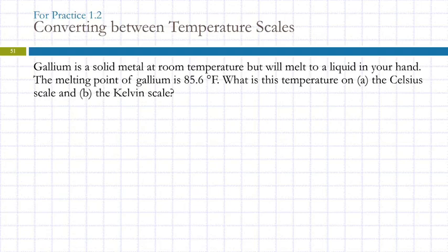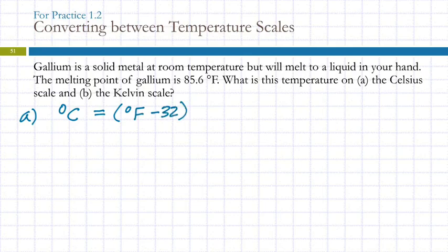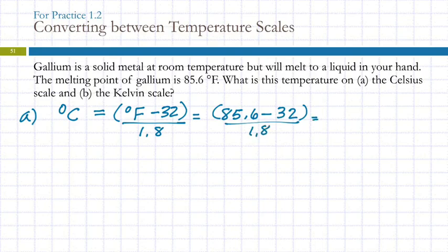Gallium is a solid metal at room temperature but will melt to a liquid in your hand. The melting point of gallium is 85.6°F. What is this temperature on the Celsius scale and the Kelvin scale? To convert Fahrenheit to Celsius, the temperature in Celsius equals the temperature in Fahrenheit minus 32, the whole quantity divided by 1.8. We take 85.6, subtract 32, divide by 1.8. You need to learn how to communicate with your calculator — use parentheses, or do 85.6 minus 32 and press enter, then divide by 1.8.